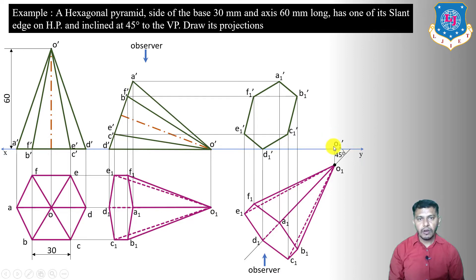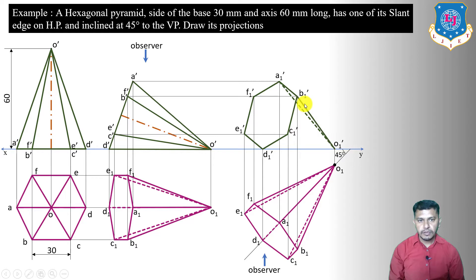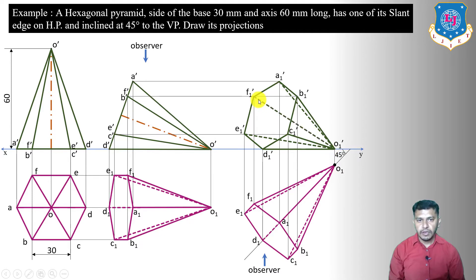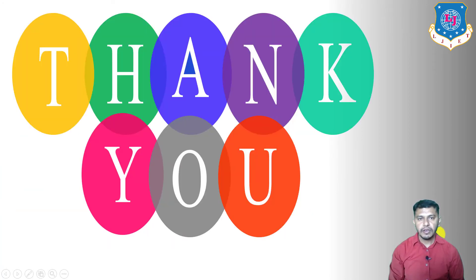Draw slant edges applying the intersection rule — two visible lines never intersect, two hidden lines never intersect. O1'–A1': hidden, intersects visible base edge. O1'–B1': visible. O1'–C1': visible. O1'–D1': visible. O1'–E1': hidden, intersects C1'–D1'. O1'–F1': hidden, intersects base edge C1'–B1'. This completes the final front view and top view of the hexagonal pyramid with one slant edge on HP and inclined at 45 degrees to VP. Thank you for watching, see you in the next lecture.